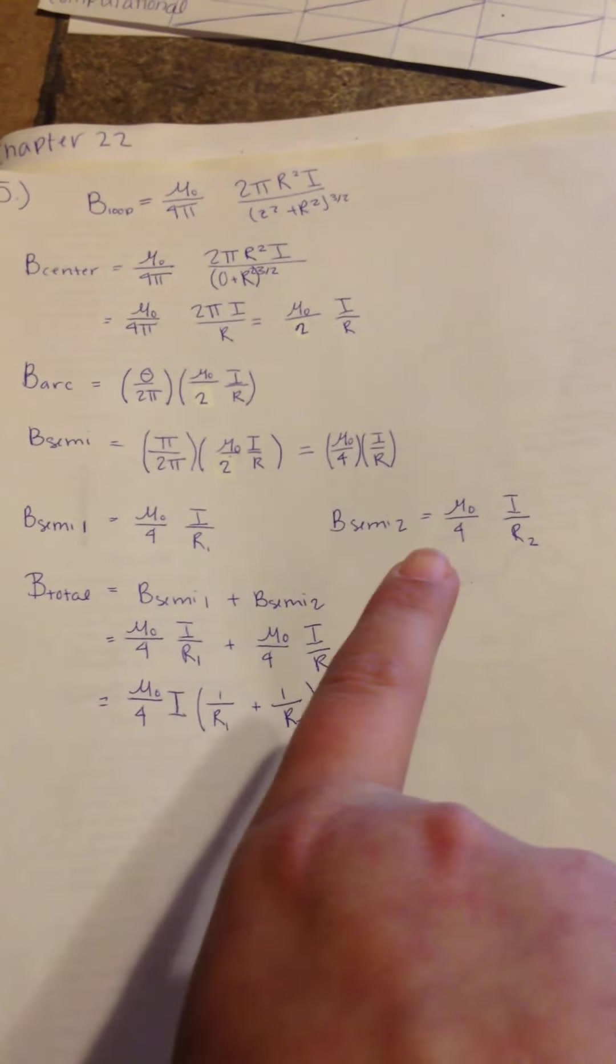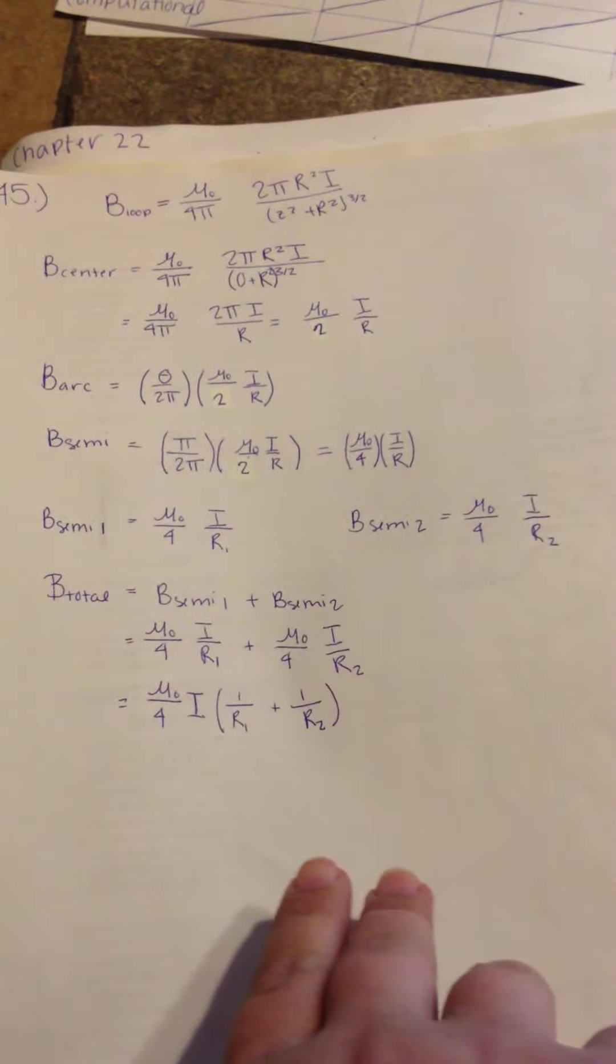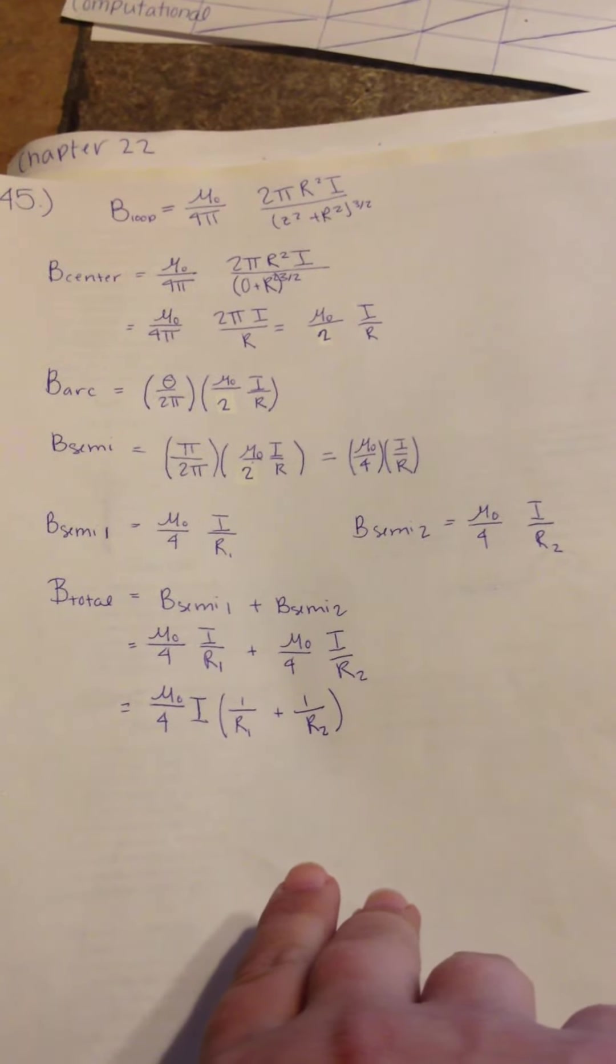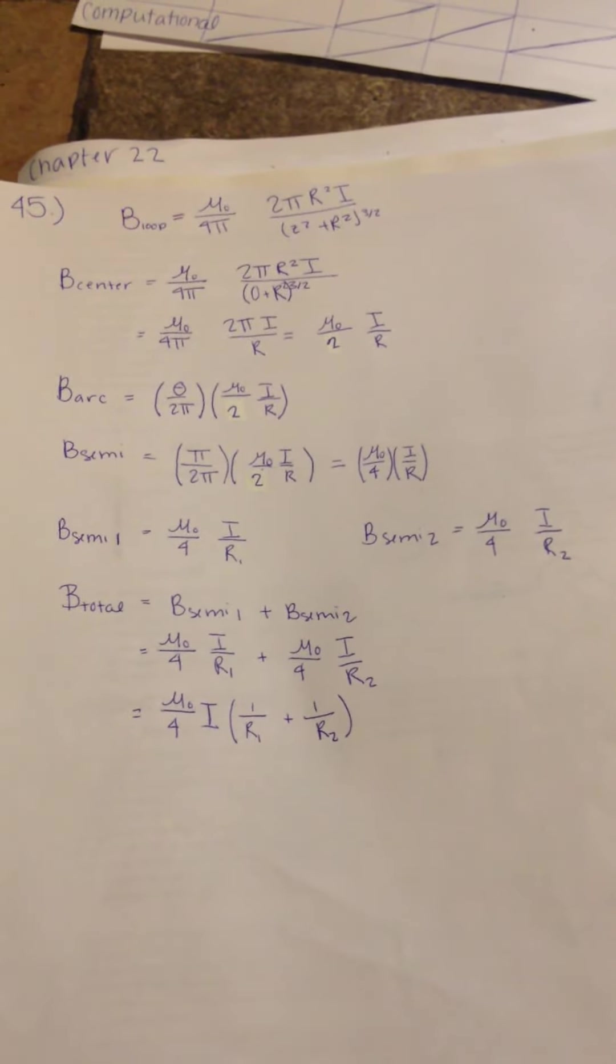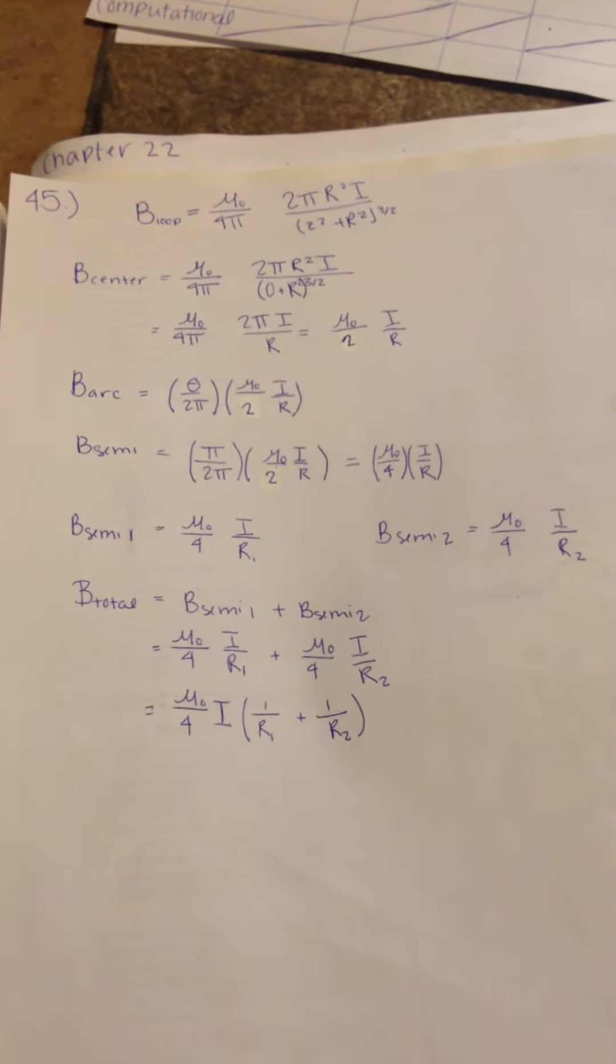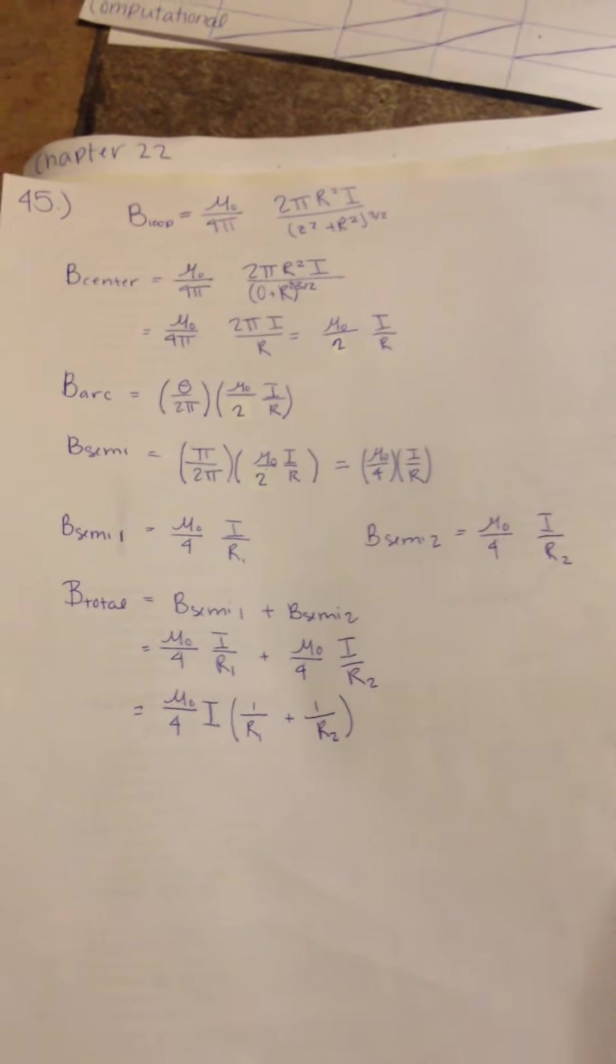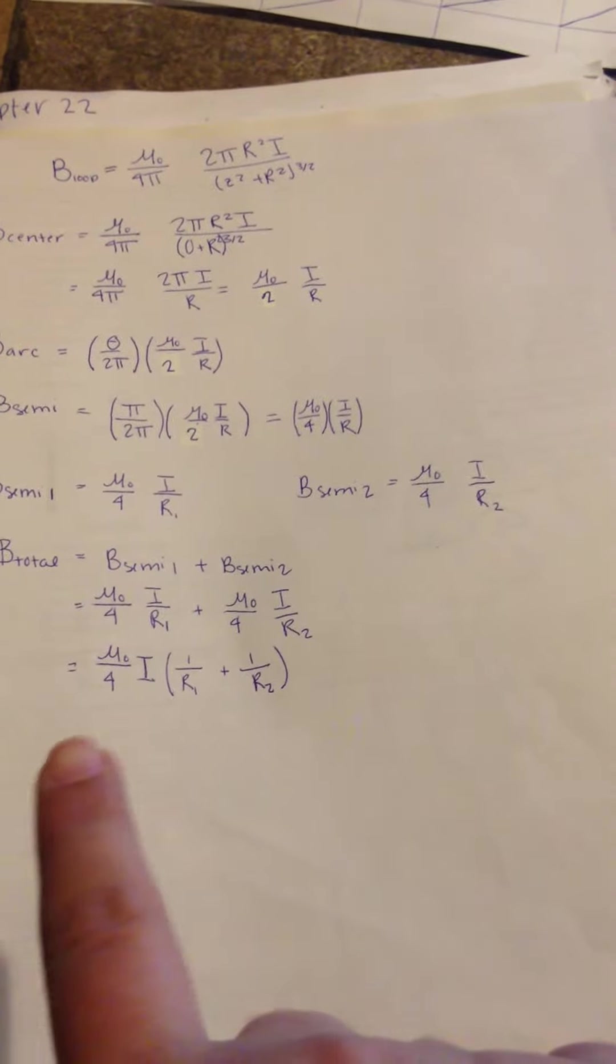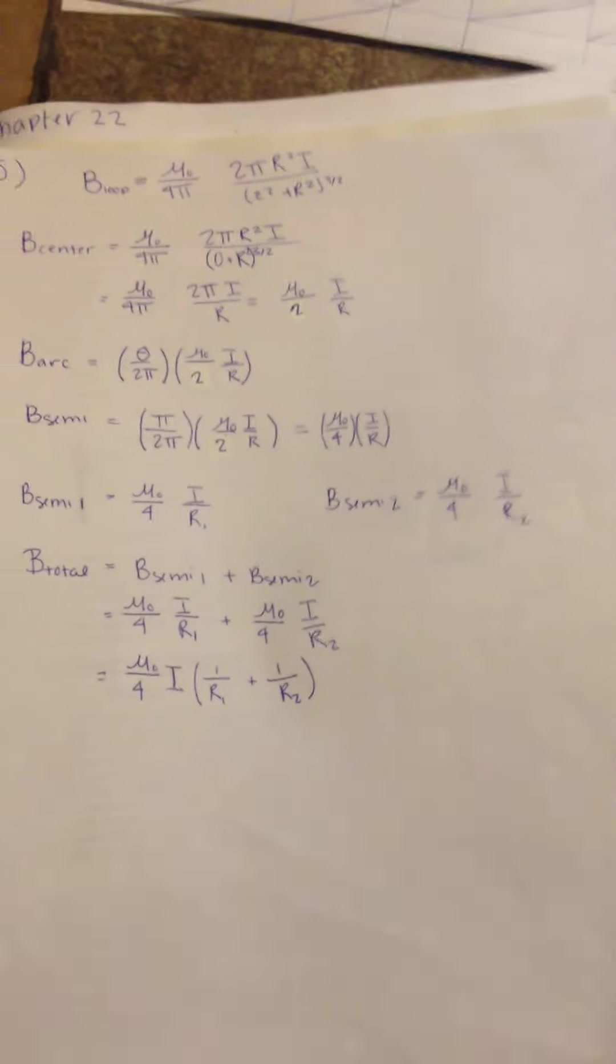And we found both of those through this. They are actually both the same. So it really is just mu naught over 4 times I over R1 plus mu naught over 4 times I over R2, because we do have the different radiuses of each semicircle. And that's going to simplify and give you this B total. And that is what we're asking for.